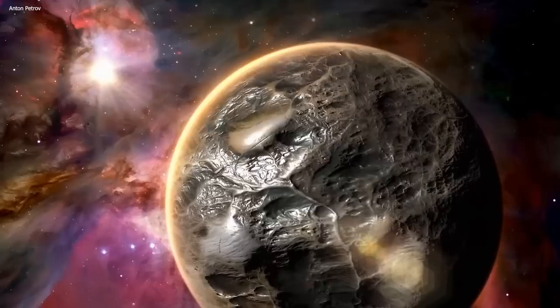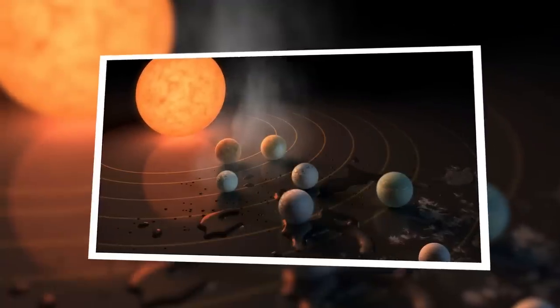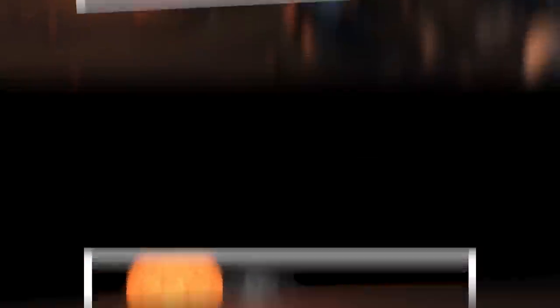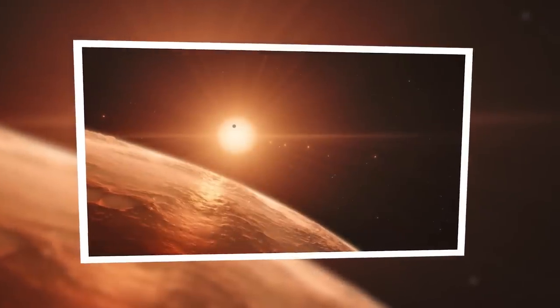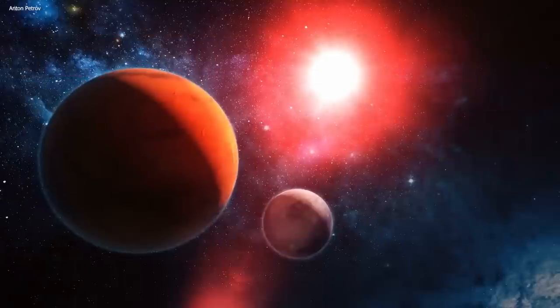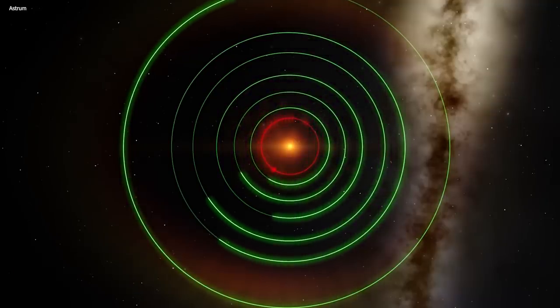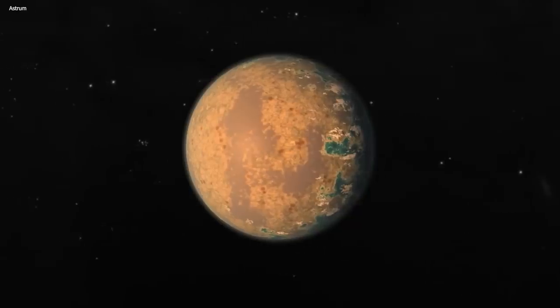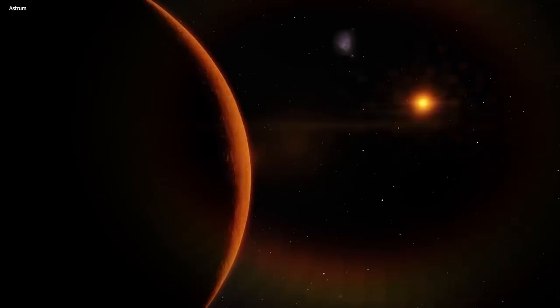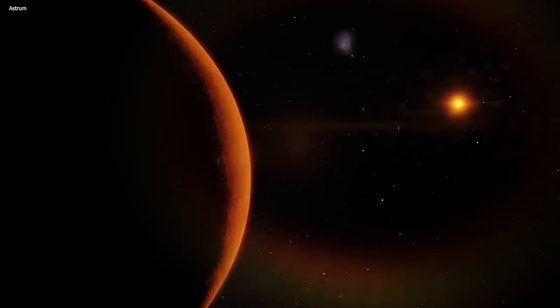Now where is this fascinating world? It's part of a family of seven rocky planets, all orbiting a pretty unique star called TRAPPIST-1. And where's that, you ask? It's in the constellation of Aquarius, about 40 light-years away from us. That's pretty far by our standards. But in cosmic terms, it's almost like being neighbors.